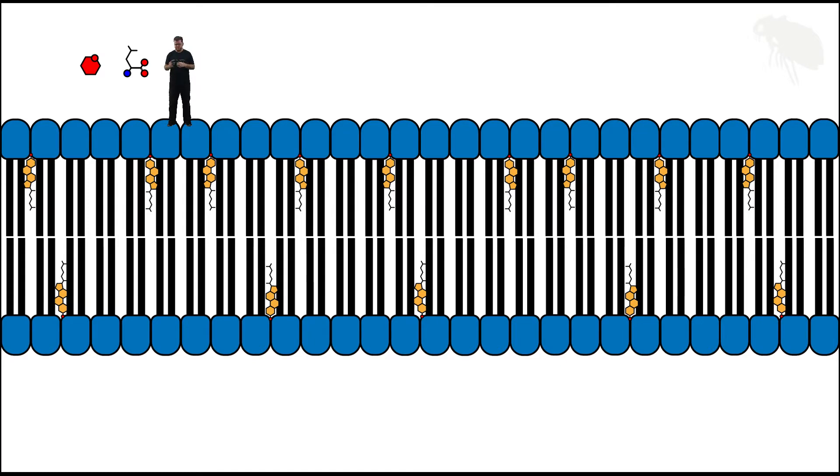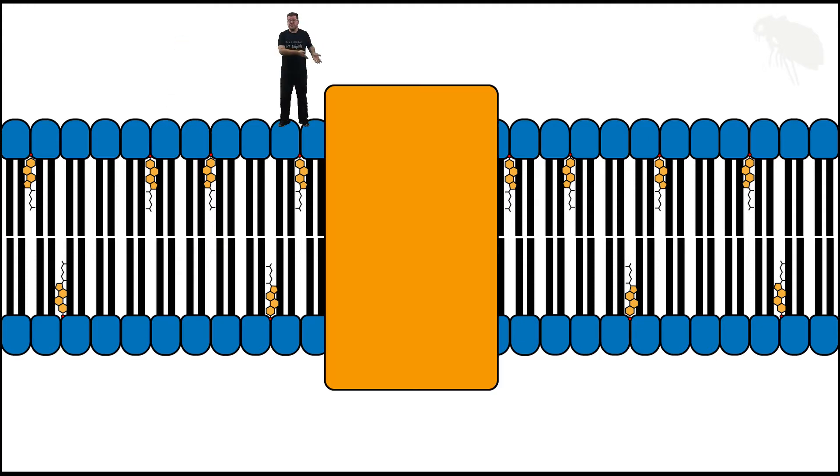They're small organic particles, too big for channels, but they still need a way to passively move through the membrane. The way they do it is through what's called a carrier protein, which operates in a different fashion than the channel.